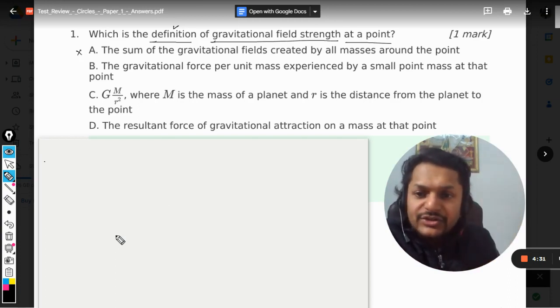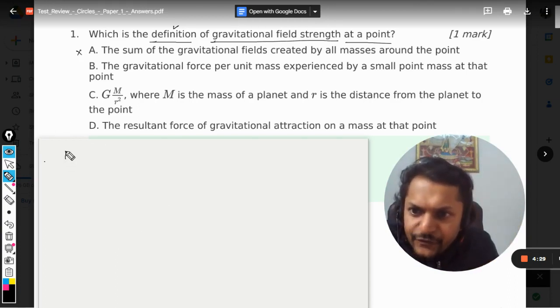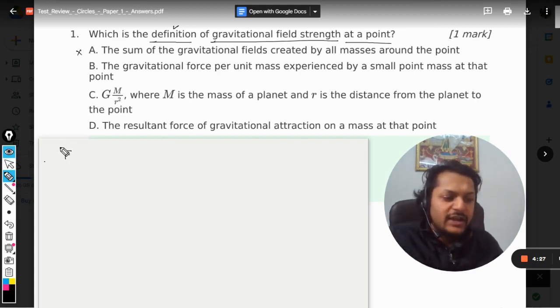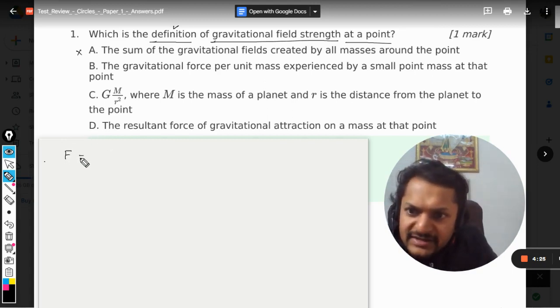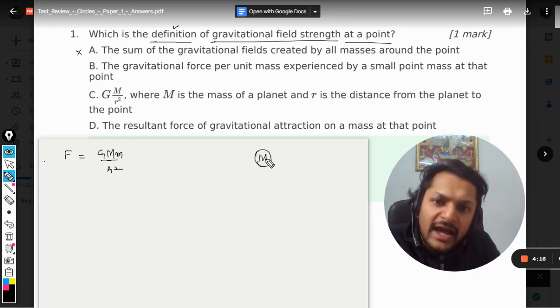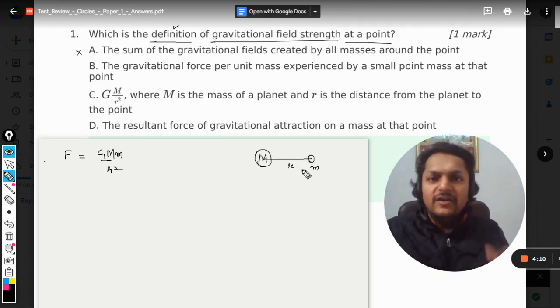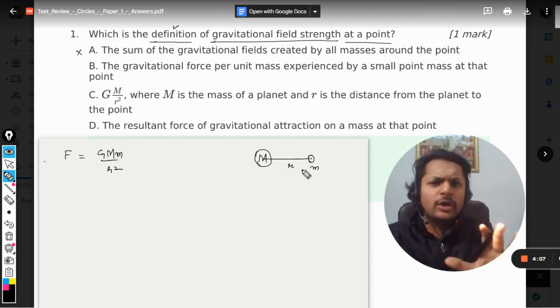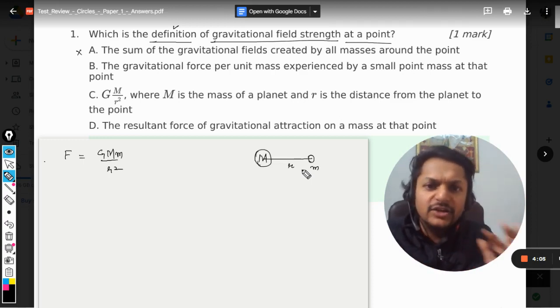Now there are three things that we need to consider in this question. The first thing is the formula for the gravitational force and what is that? F is given by G into M into m divided by r square, where M is the mass of the planet or you can say one body, and r is the distance between two bodies, and small m is the mass of another body which can be an astronomical body which can be any other body or whatever.